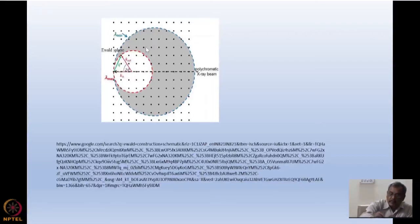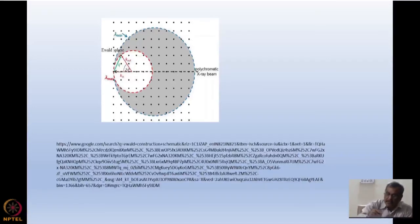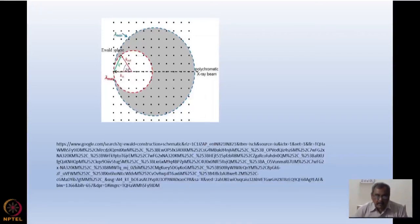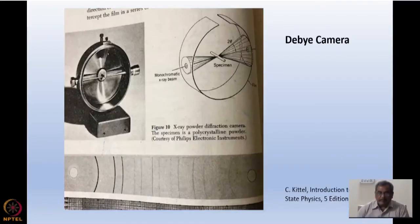I have superimposed these two spheres on the reciprocal lattice. All reciprocal lattice vectors falling between these two Ewald spheres will satisfy 2D sinθ = λ for one of the wavelengths in the beam from λ_max to λ_min, and there will be a Bragg reflection in that direction.